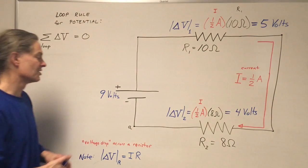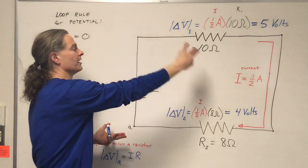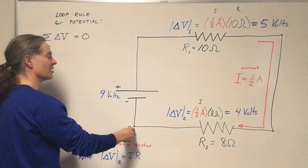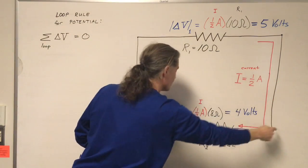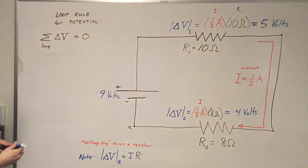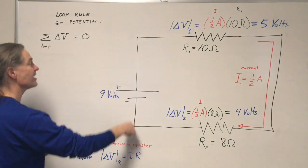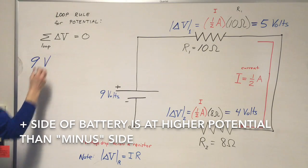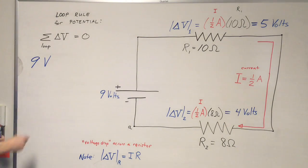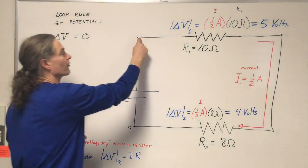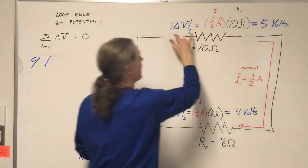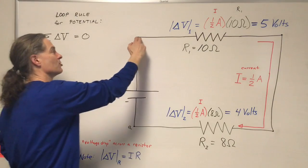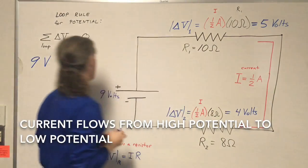Let's see how this loop rule plays out. Starting at point A, I'm going to go all the way around the loop and sum up the changes in potential. Going from A to here, I have a 9 volt gain in electric potential. Going from here to here, I have a voltage drop of 5 volts, so the change in potential is minus 5 volts.